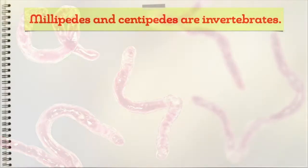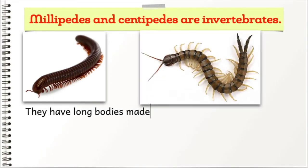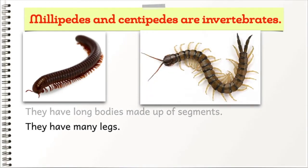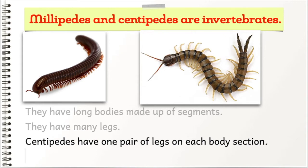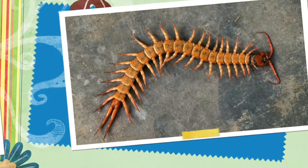Millipedes and centipedes are invertebrates. They have long bodies made up of segments and many legs. Centipedes have one pair of legs on each body section, while millipedes have two pairs of legs on each body section.